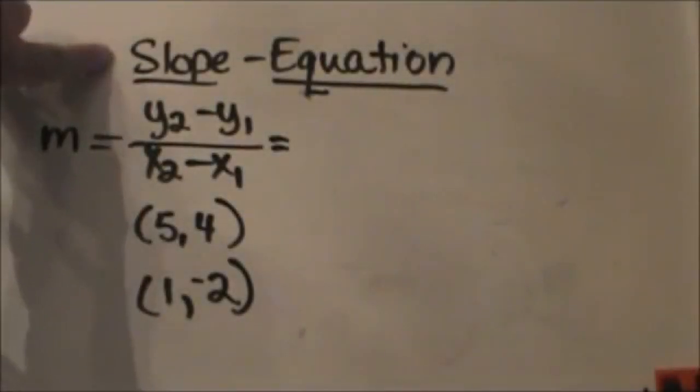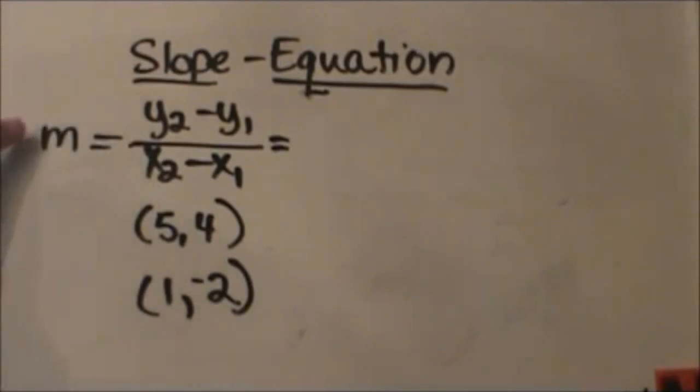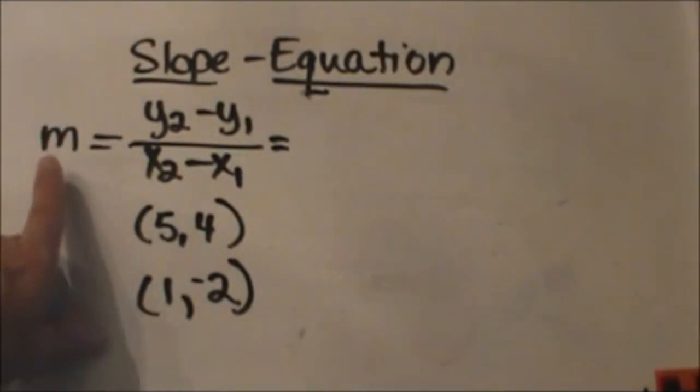Today we're going to talk about the slope of a line using the slope formula. Here's our slope formula and notice that m represents slope.